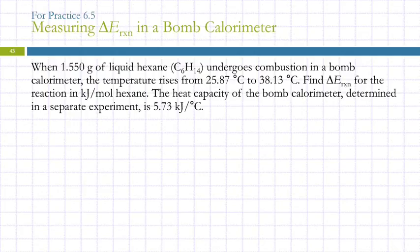We can do an example here. When 1.550 grams of liquid hexane undergoes combustion in a bomb calorimeter, the temperature rises from 25.87 degrees Celsius to 38.13 degrees Celsius. Find delta E reaction for the reaction in kilojoules per mole hexane. The heat capacity of the bomb calorimeter, which was determined in a separate experiment, is 5.73 kilojoules per degree Celsius.